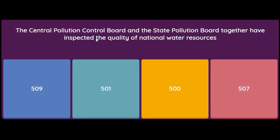The Central Pollution Control Board and the State Pollution Control Boards together have inspected the quality of national water resources. The number of water resources inspected by them is — 509, 501, 500, or 507? The answer is 507 national water resources inspected for quality.